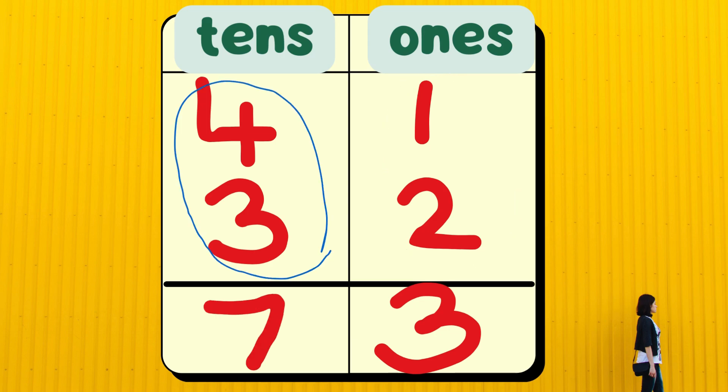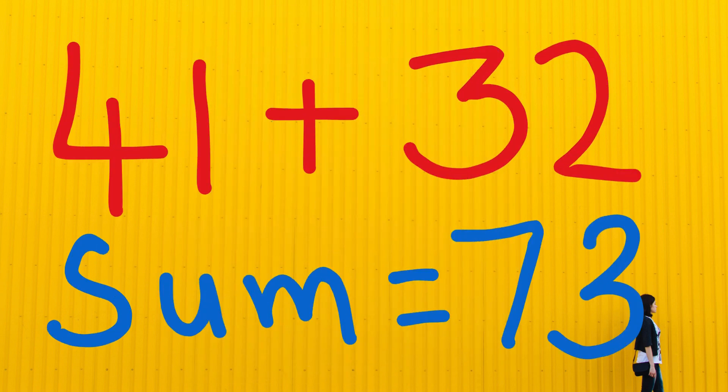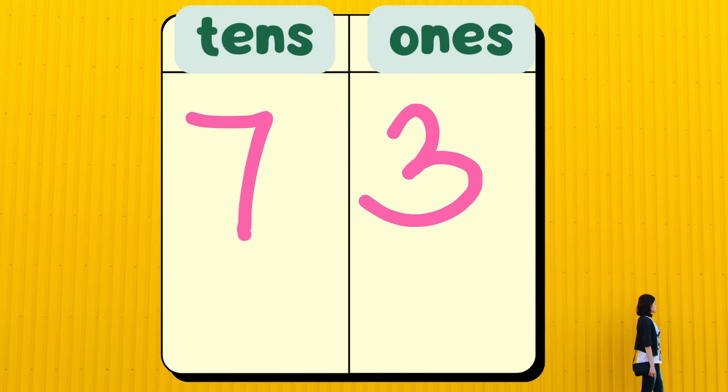Next, let's add the 10s. 4 and 3 gives me a sum of 7. So, write 7. So, 41 plus 32 gives us a sum of 73. 73 has 7 10s and 3 1s.